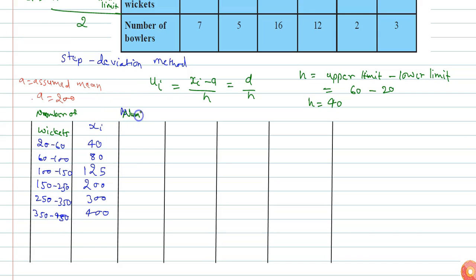The column for number of bowlers is given as 7, 5, 16, 12, 2, and 3.